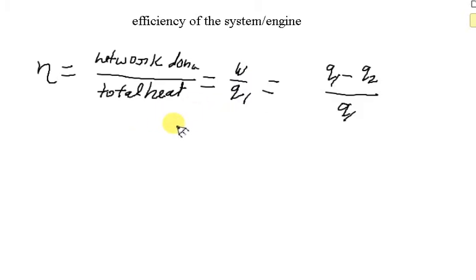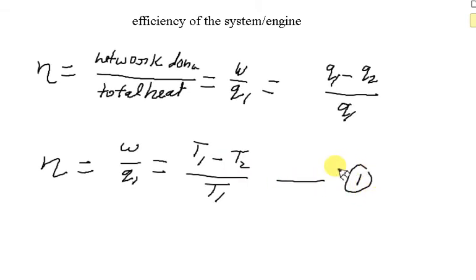This is the equation for efficiency. In terms of temperature, we can write the equation like this: W by Q1 equals T1 minus T2 upon T1. Here T1 is the temperature of the hotter body and T2 is the temperature of the colder body. This is the equation for efficiency of the system.